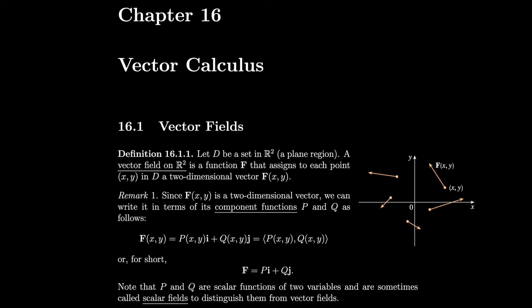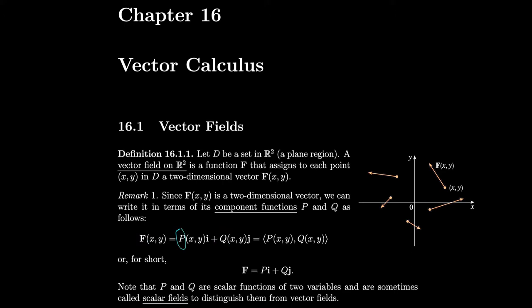Let D be a set in R2, a plane region. A vector field on R2 is a function F that assigns to each point (x, y) in D a two-dimensional vector F of x, y. Since F(x, y) is a two-dimensional vector, we can write it in terms of its component functions P and Q as F(x, y) = P(x, y)i + Q(x, y)j, which we can also write as the vector bracket P(x,y), Q(x,y). Notice that F is a vector function, while P and Q are scalar functions — scalar functions of two variables — so we sometimes call them scalar fields to distinguish them from vector fields.